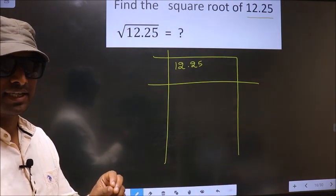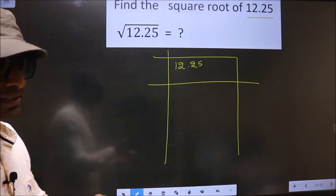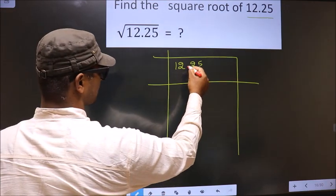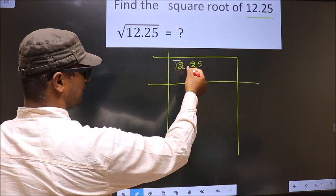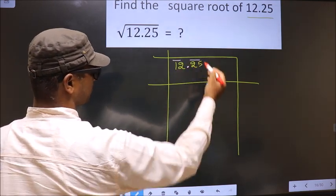Now we should divide the given number into pairs before the decimal and after the decimal. So before the decimal, these two numbers, one pair. After the decimal, these two numbers, one pair.